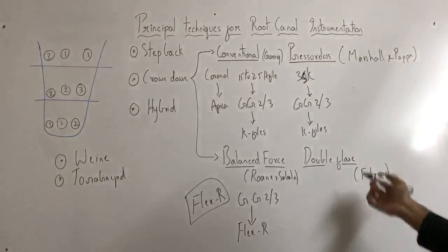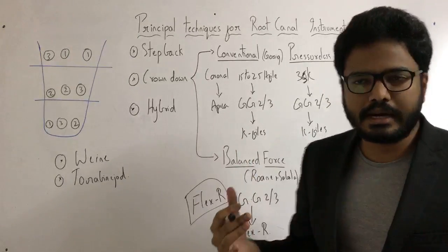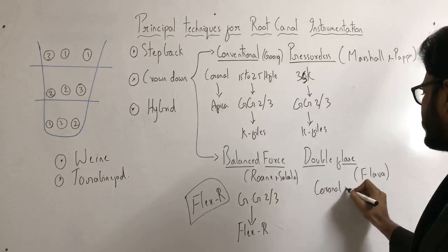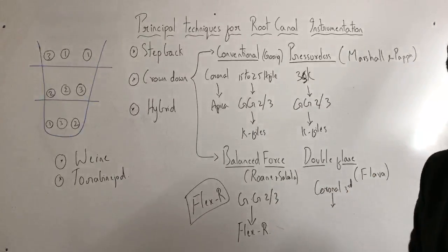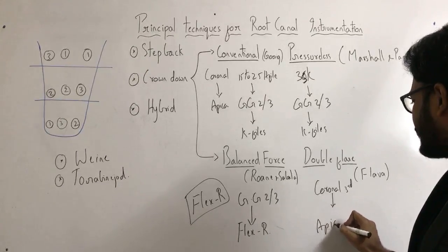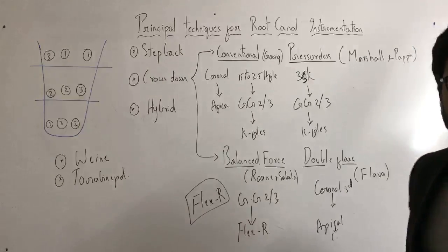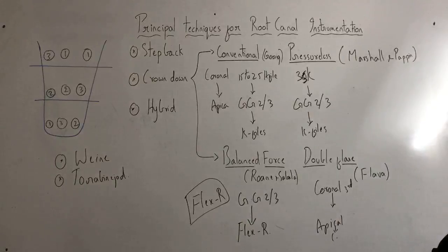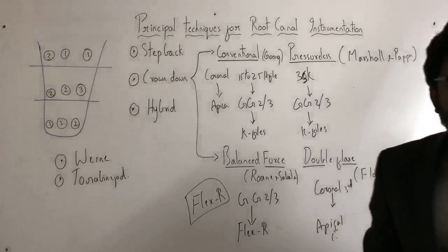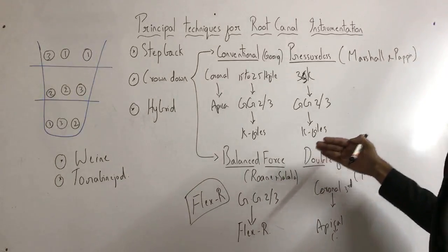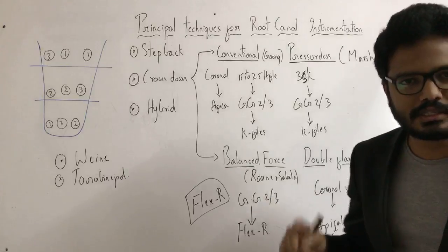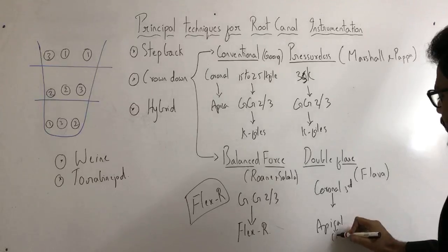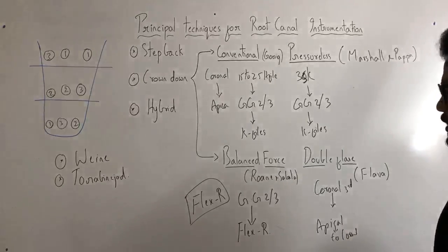The double-flare technique uses a combination of crown-down and step-back. In this technique we start from the coronal curve and proceed apically initially. Then we start from the apical curve and proceed coronally. That's why it's called the double-flare technique, proposed by Fava. We initially start using K-files and proceed coronal to apical till working length, then use these same K-files with sequentially larger sizes proceeding from apical to coronal.